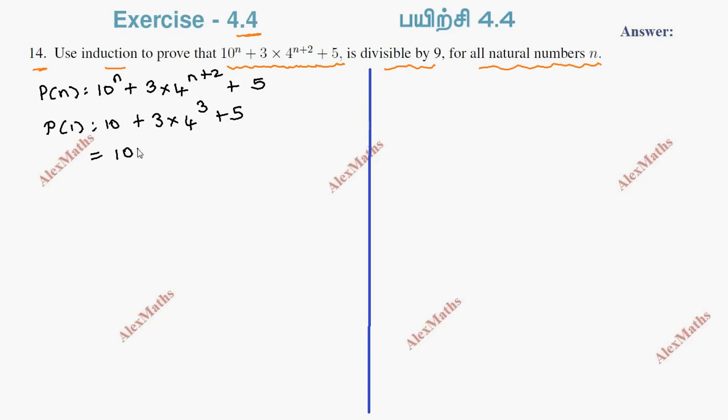Now the total is 10 plus 4 cube is 64. 64 into 3 is 192, plus 5. Total is 192 plus 15, which equals 207. If we divide 207 by 9, we get 23, exactly divisible. Therefore, it is divisible by 9.